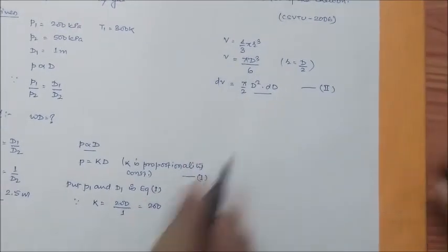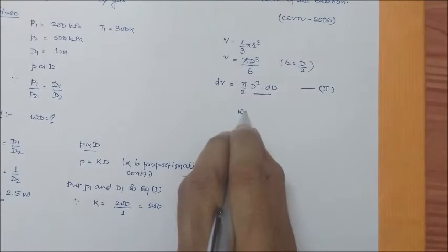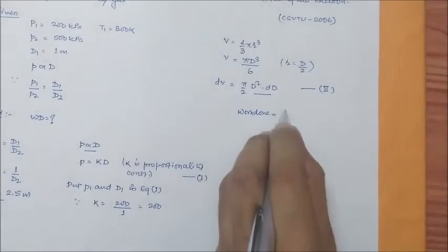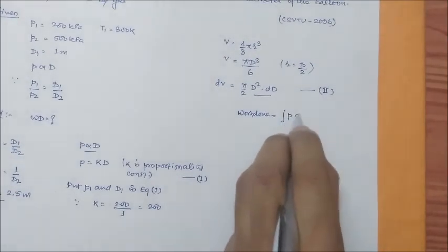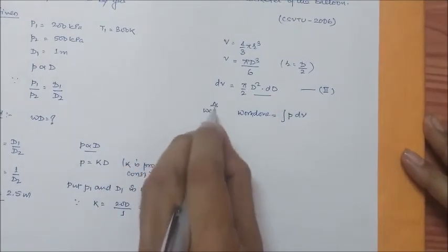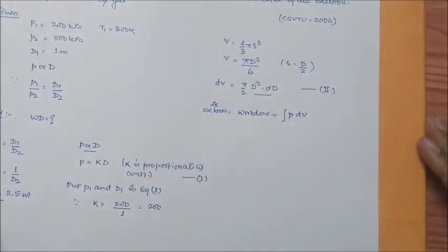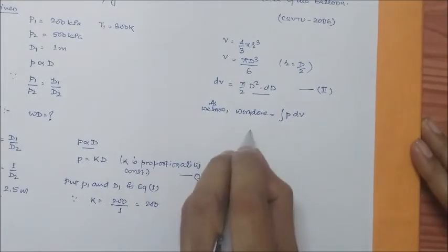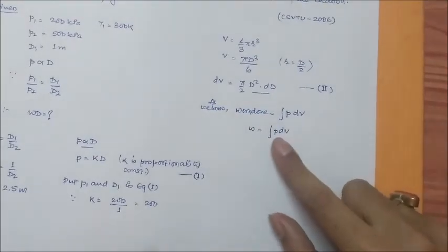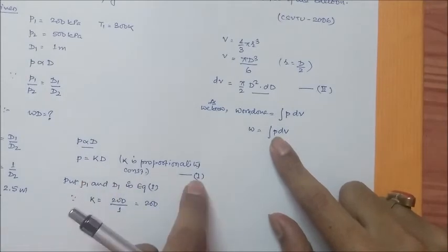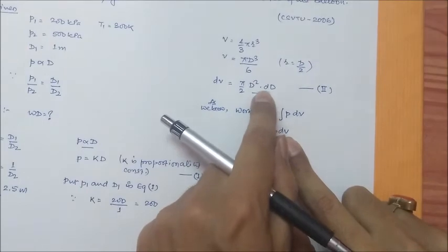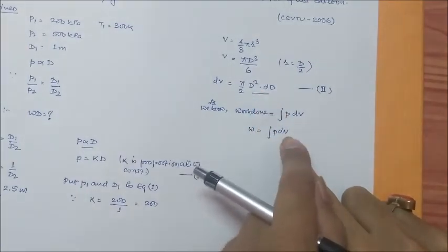Now we have work done. Work done for a closed system is given by integral PdV, as we know. So W is equal to integral PdV. Now we can replace P by KD from equation 1 and dV as π/2 D² multiplied by dD from equation 2.